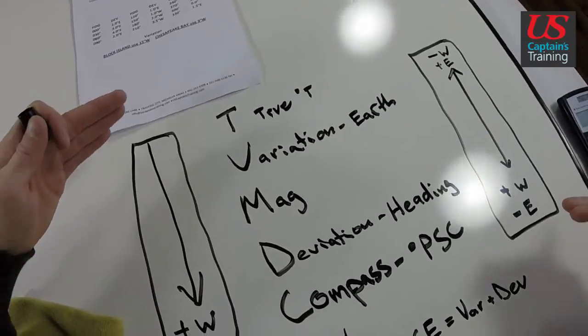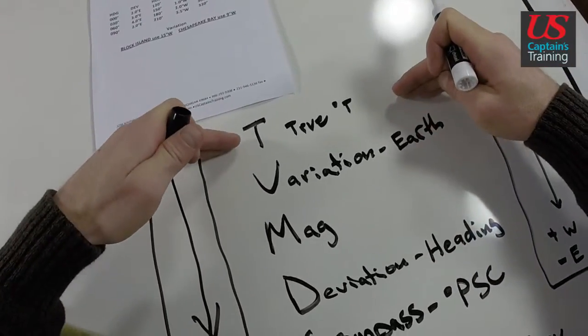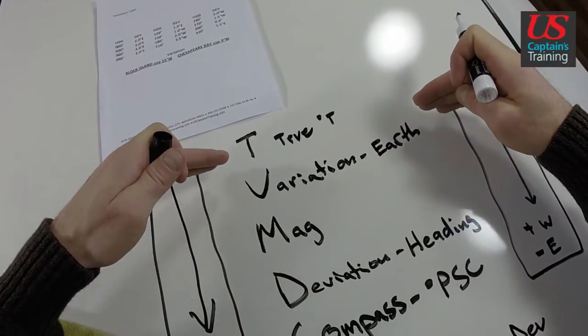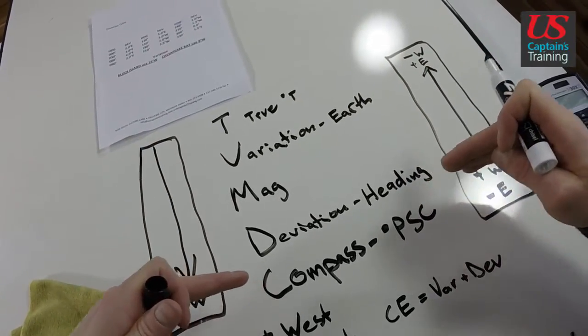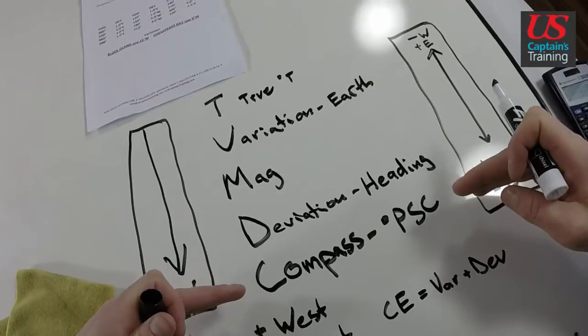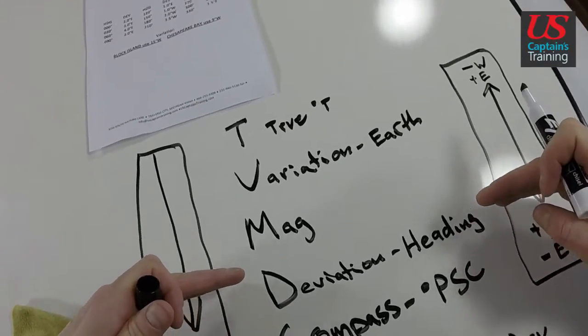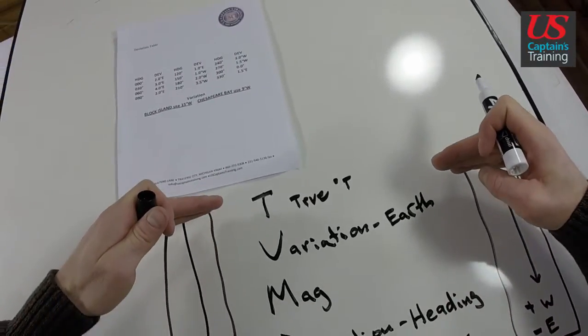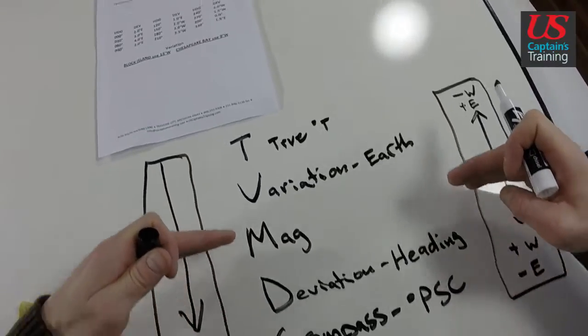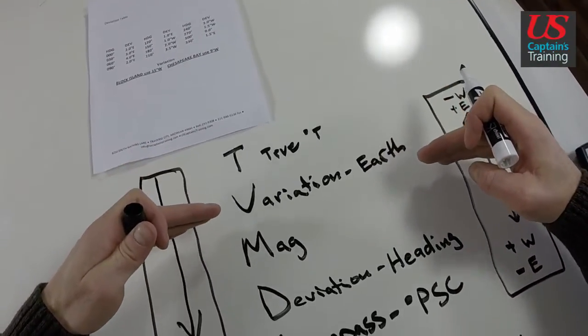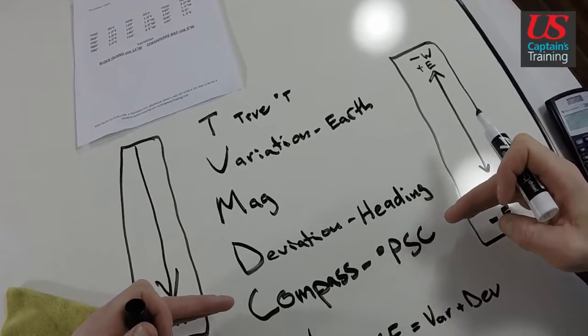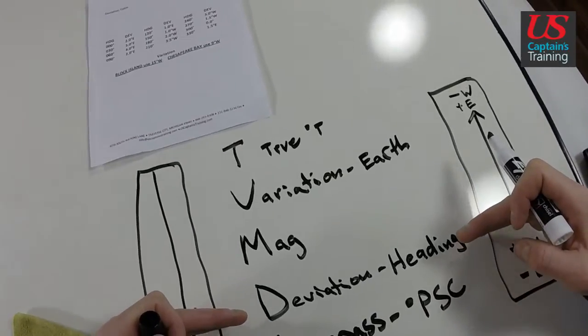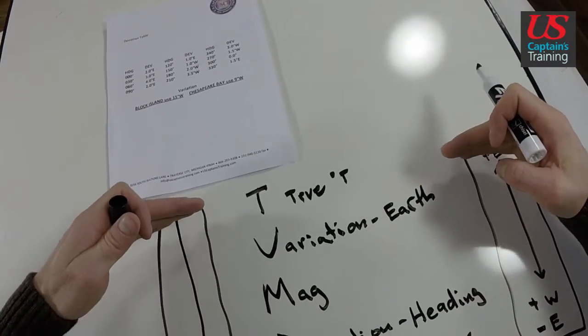You'll see us going from true and adding west and subtracting east on the way down. And then you'll see us go from compass and adding east and subtracting west to get back up. And you'll see how it goes back and forth. When you go down and you add west, subtract east, and you get compass. Well, it's the same thing. You can use the same numbers and add east and subtract west and get back to true.